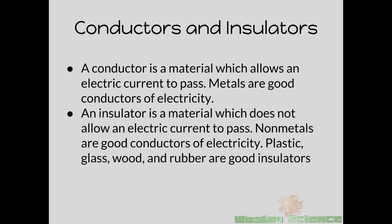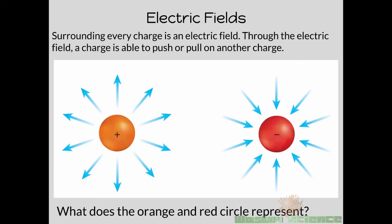A conductor is a material which allows an electric current to pass — metals are good conductors. An insulator is a material which does not allow electricity to pass — non-metals like plastic, glass, wood, and rubber are good insulators. One of the best conducting metals is copper, and even better is gold but that's rare. Copper is what most of our electrical wires are made of. We also put plastic around the copper so that electrons have no choice but to follow the copper path and not jump onto other things like your hand.